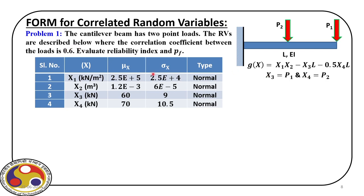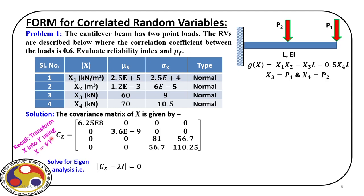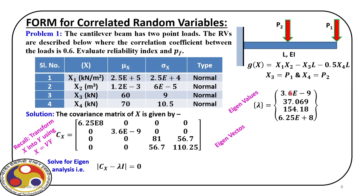Our task is to find the reliability index and the probability of failure. We start by constructing the covariance matrix — only x3 and x4 are correlated, so only those off-diagonal terms are nonzero. We solve the eigenvalue problem and get four eigenvalues, and for every eigenvalue we find the corresponding eigenvector. Using these eigenvalues and eigenvectors, we find the parameters of the new random variable y.